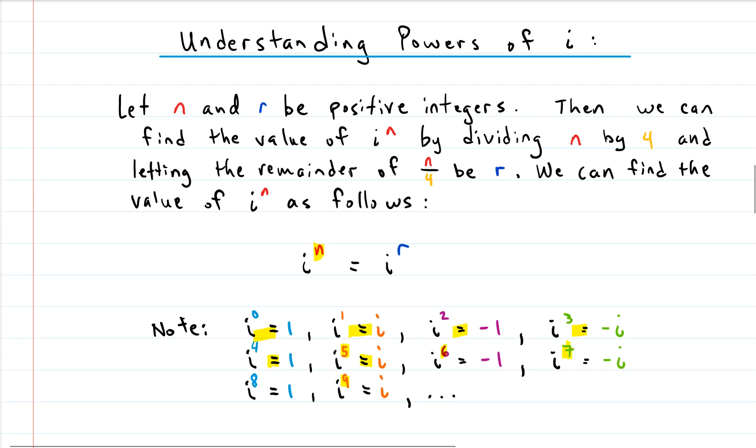We take advantage of this and say i to a really big number—that's that n—and if we take that n and divide it by 4, there's going to be a remainder and we're going to call that remainder r. So r can be either 0, 1, 2, or 3. All we do is take that really big number, divide it by 4, get the remainder, and then we can substitute i to the really big number with i to whatever the remainder was. It's super simple.